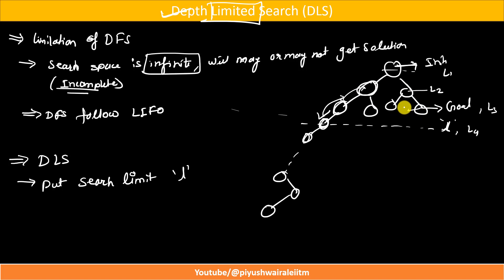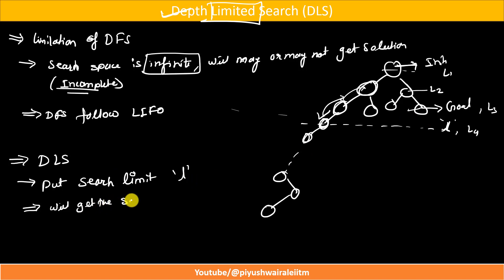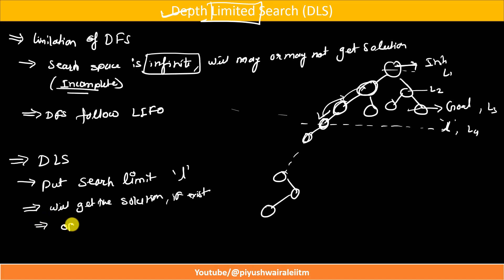That is how DLS works — we simply put the search limit to L. If we set search limit L, we will get the solution if it exists; otherwise the algorithm will terminate. However, we will not get the optimal solution.